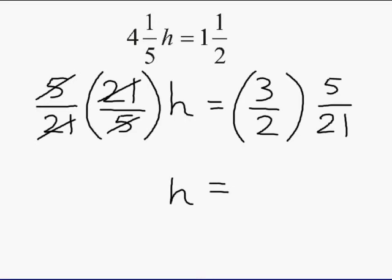On the right side, we are going to multiply 3 halves by 5 21sts. First, we are going to take the 3 and the 21, because they share a common factor, and reduce 3 over 21 to 1 over 7.